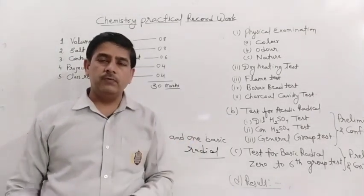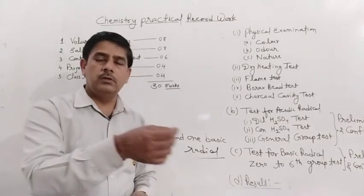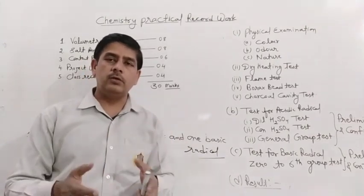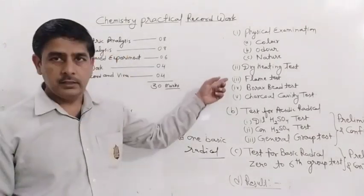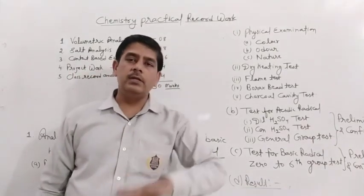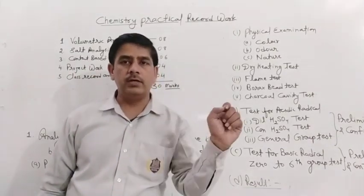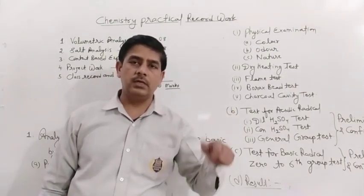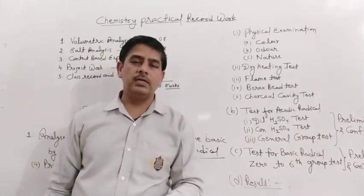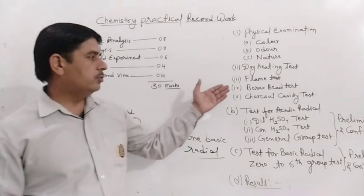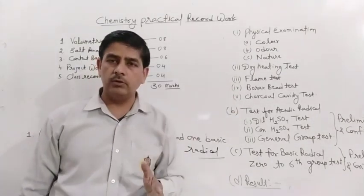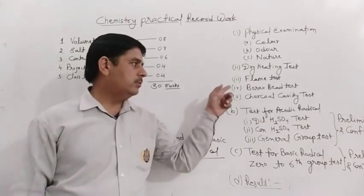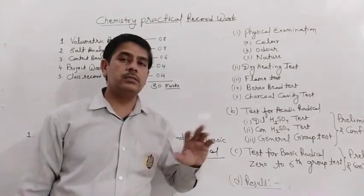In the flame test, whenever you take the salt to the burning flame, what type of flame is it producing? Is it green or red or some other color? You will write that here. All these things are available in your lab manual; you have to search them out and write about them. You don't need to perform these things at home if you are not doing the practical in school. The borax bead test and the charcoal cavity test are also available in your lab manual — for any type of salt you can write about the borax bead test and charcoal cavity test if applicable.